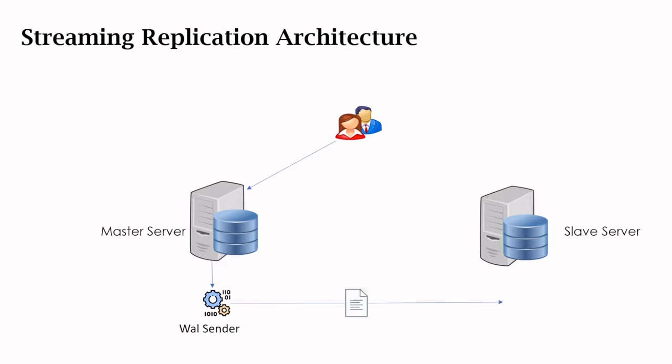On the slave side there is a WAL receiver. It reads all the changes sent by the WAL sender and applies them to the standby server. Remember these two processes are very important for streaming replication: WAL sender on the master side, WAL receiver on the slave side. These are background processes generated at the backend.